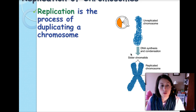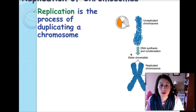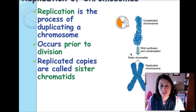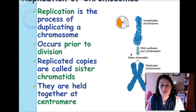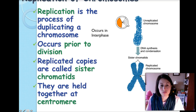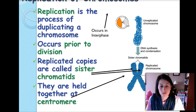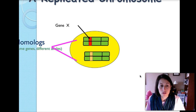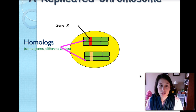Replication is the process of duplicating a chromosome. We've talked about this happening in S phase of interphase — it has to occur prior to division. The replicated copies are called sister chromatids, and they're held together at the centromere.